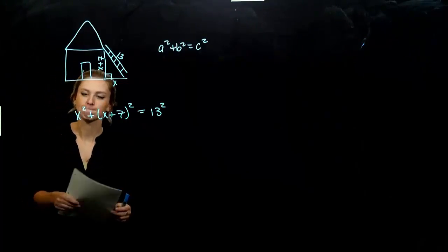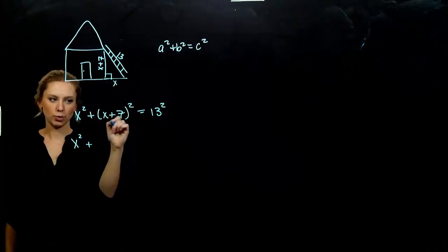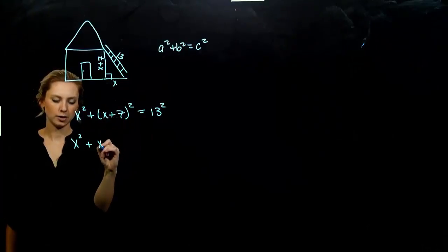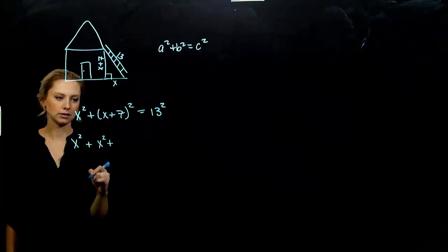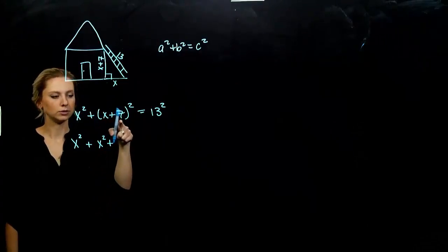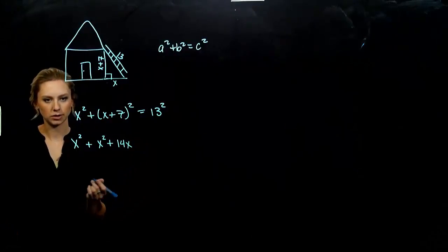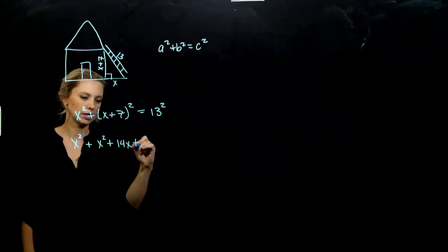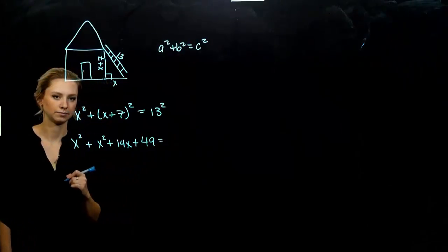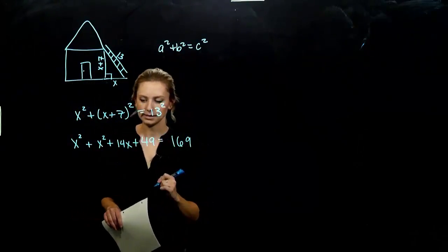We have to FOIL and start simplifying out because I need a plain trinomial or polynomial that I can factor, having it set equal to zero. I've got x², and that's already simplified. I'm going to use my shortcut to evaluate this. I've got the first part squared plus two times the first times the second, so 2 × 7 gives me 14x, plus the last part squared, 49. 13 × 13 is 169.